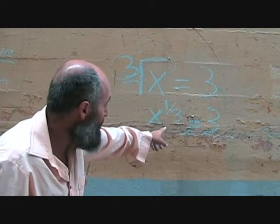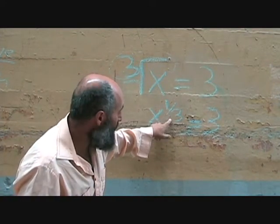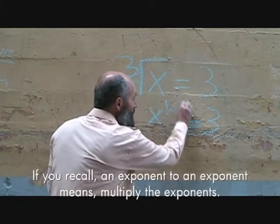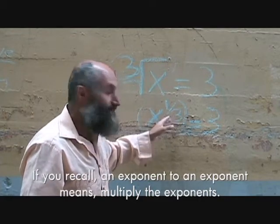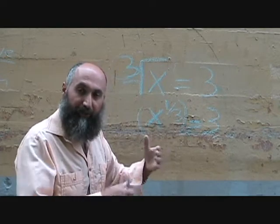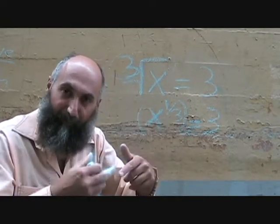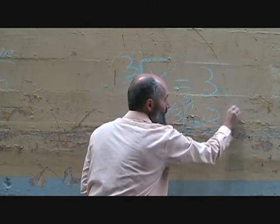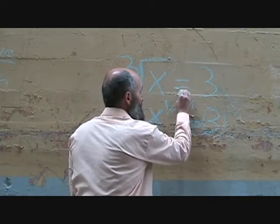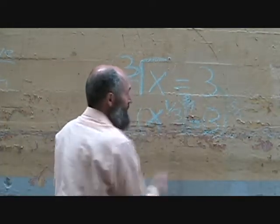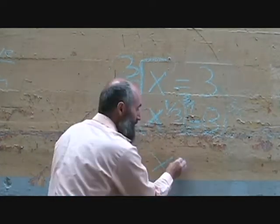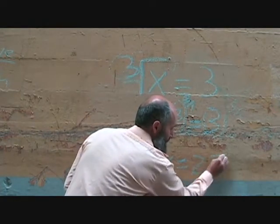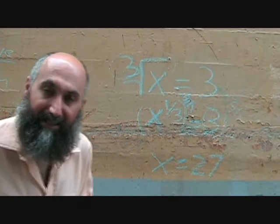Now, the way you get rid of x to the 1 third is to do the opposite in the power. That's 1 over 3, and to undo 1 over 3 you multiply by 3 over 1. So you take both sides to the power of 3 over 1. On the left, 1 third times 3 over 1 — the 3 on top cancels the 3 on the bottom — and this just becomes x. On the right, 3 to the power of 3 over 1 is just 3 cubed, which is 27. So x equals 27.